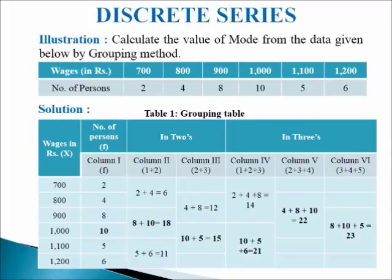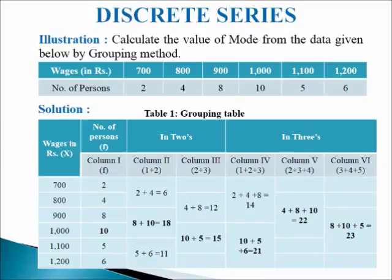In column 5, we leave the first frequency and add the second, third, and fourth: 4 plus 8 plus 10 equals 22, and we leave 5 and 6. In column 6, we add the third, fourth, and fifth frequencies, leaving the first and second: 8 plus 10 plus 5 equals 23, and we leave the sixth frequency. This is how we make the grouping table.